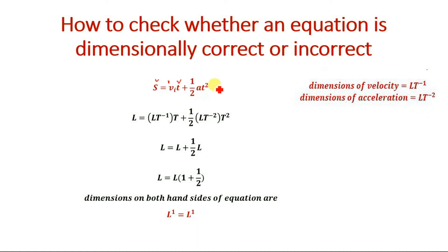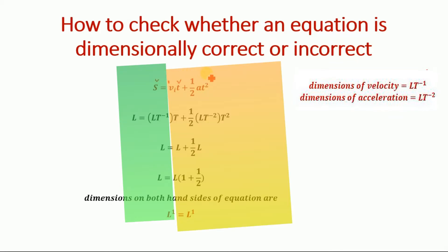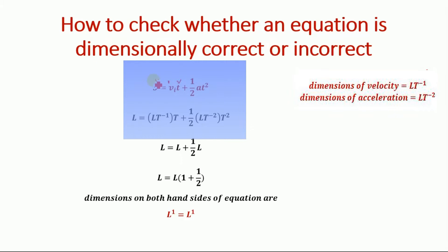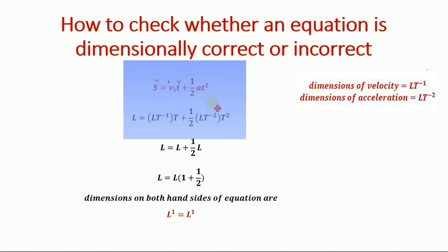For an equation to be dimensionally correct, the dimensions on the left-hand side must equal the dimensions on the right-hand side. The dimension of S is L, which equals the dimensions of velocity L T to the power of minus 1, multiplied by dimension of time T, plus one-half — a number — multiplied by the dimension of acceleration L T to the power of minus 2, multiplied by T squared.